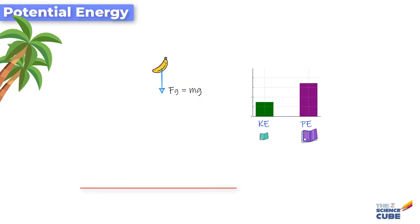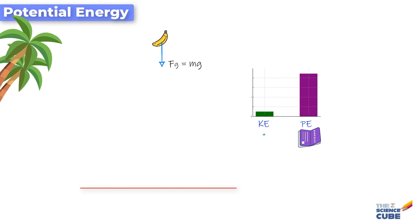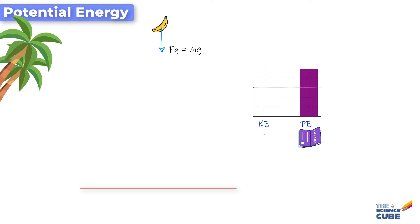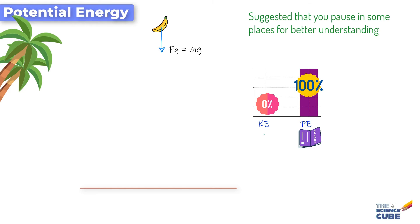As the banana moves up, it loses its kinetic energy and slows down, and then finally stops once it loses all its kinetic energy. What has happened here is that the gravitational force has completely emptied the kinetic energy account of the banana and converted it into potential energy.